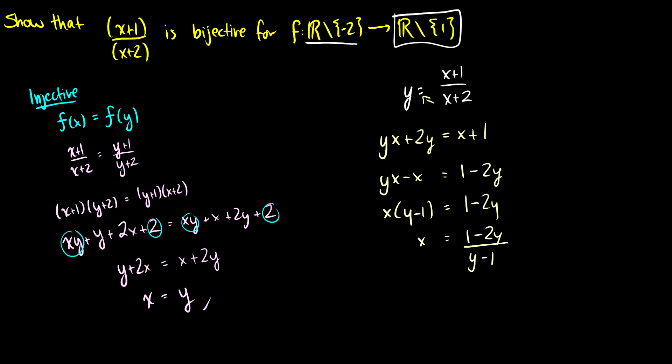So we've shown that x = (1 − 2y)/(y − 1) is in the reals as long as y ≠ 1, confirming surjectivity. Therefore, we've proven that f(x) = (x + 1)/(x + 2) is bijective because it is both injective and surjective. If you have any questions, please leave them in the comments below.